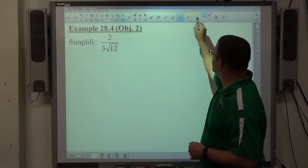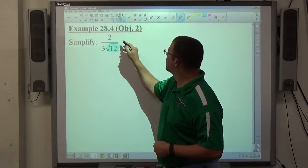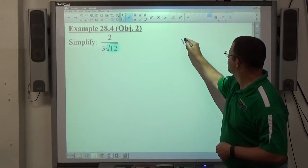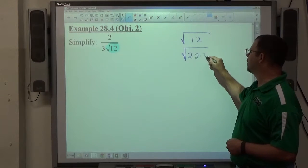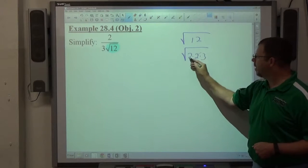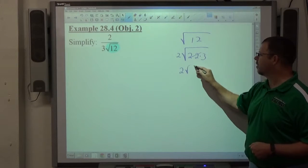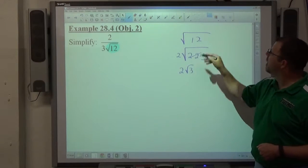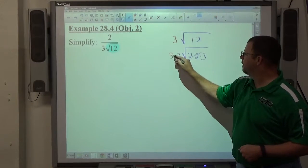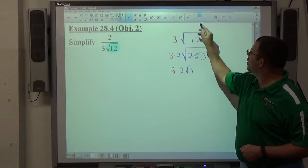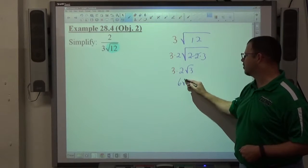One slight difference in this one, notice the square root of 12 can be simplified in this manner. 12 is 2 times 2 times 3. A pair of 2's gets to come out, so 2 times the square root of 3 is the same as the square root of 12. Keep in mind it's 3 times the square root of 12 in the original problem. So all together the bottom can be rewritten as 6 times the square root of 3.